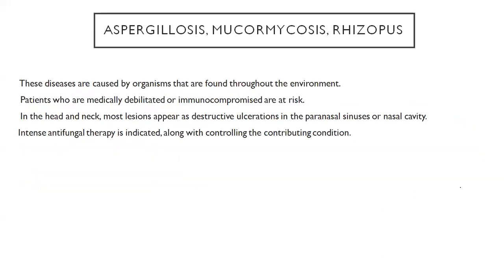Topical treatment is by using nystatin and clotrimazole, and systemic treatment is by fluconazole and ketoconazole. Coming to aspergillosis, mucormycosis, and rhizopus — rhizopus is due to spore inhalation. Mucormycosis is particularly important in the current situation, because many patients suffering with COVID also show symptoms of mucormycosis. It can present as destructive ulcerations where a person can lose eyesight or become deaf.